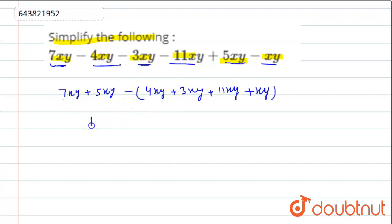This is 7 plus 5. This will be 12xy minus 4 plus 3 is 7.